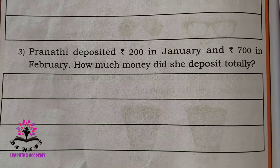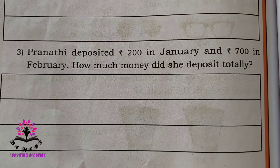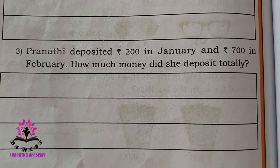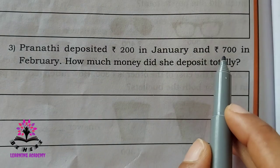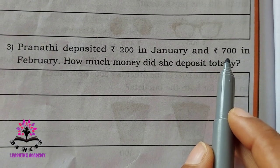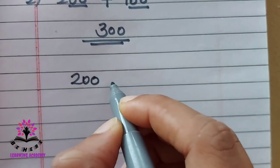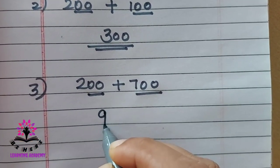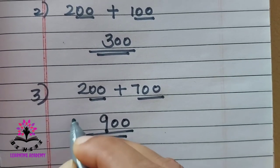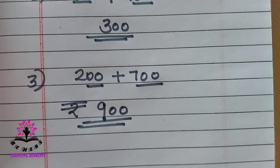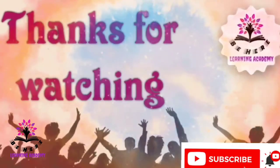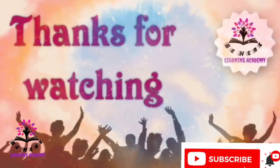Pranatha deposited rupees 200 in January and rupees 700 in February. How much money did she deposit totally? Add 200 plus 700. Both have 0 in the unit and tens places, so add the hundreds digits: 2 plus 7 is 9, with two zeros — the answer is rupees 900. Thank you.